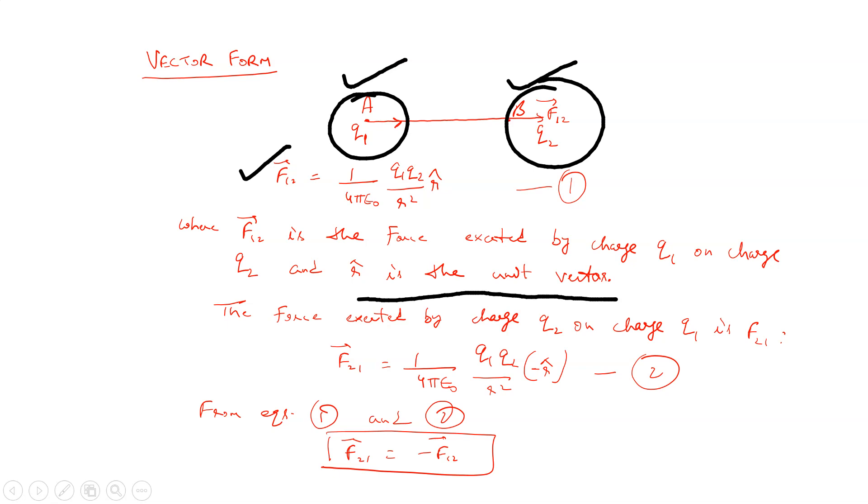The force exerted by charge q2 on charge q1 will be equal to 1 by 4π epsilon naught q1 q2 by r square minus r̂ in equation number 2, because the direction of the force will be opposite. So from equation 1 and 2, F21 equals minus F12. These forces are opposite to each other.